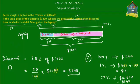So the answer to question B is $240. Now for question A: if the discount is $240, the price after discount is $1,200 minus $240. The usual price was $1,200 and he got a discount of $240, so he paid $1,200 minus $240, which equals $960. He paid a price of $960 after discount for the laptop.